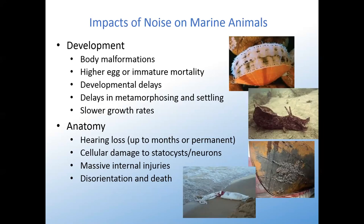Getting towards the impacts now: impacts on development include body malformations, higher egg or immature mortality, developmental delays, delays in metamorphosing or settling from the larval stage, and slower growth rates. Anatomical impacts include hearing loss, which can last months or even be permanent, cellular damage to statocysts or neurons — the auditory nerve — and statocysts are the hearing or vibration sensors that invertebrates usually have instead of ears. Massive internal injuries can result, as well as disorientation and death. For instance, nine giant squid mass stranded from a seismic survey.